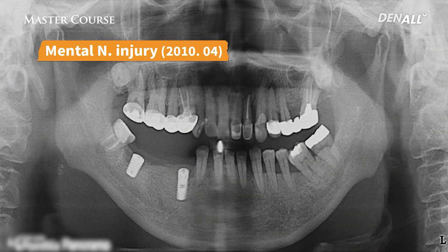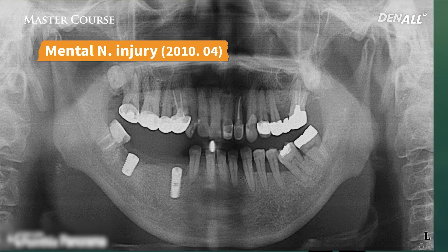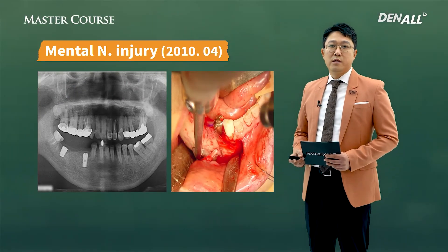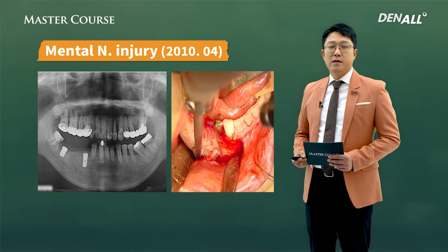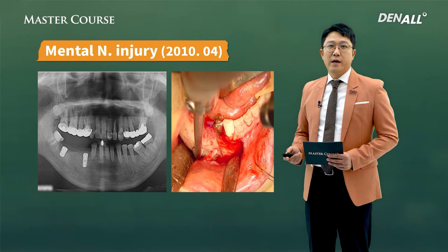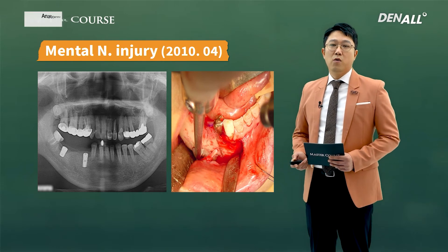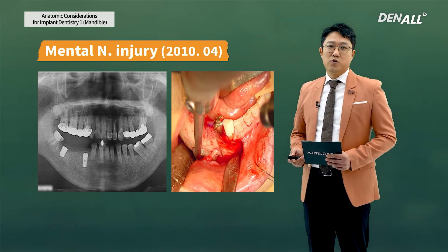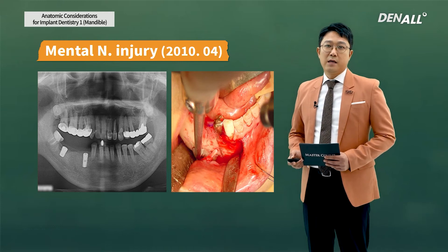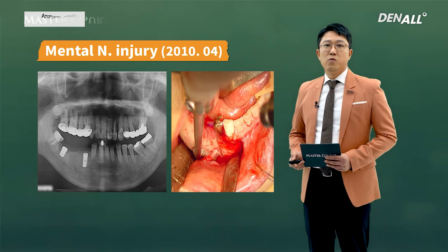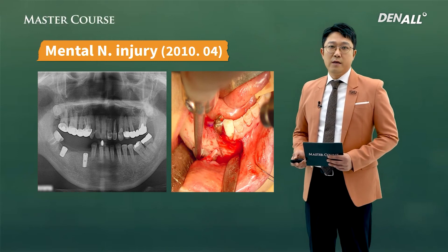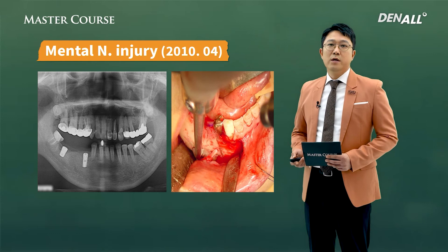In another case, a releasing incision was made and the mental nerve was injured. After implant placement, bone grafting was done, and to reposition soft tissue a releasing incision was made. Although the mental nerve was checked and the incision was made avoiding that nerve, the sensation problem lasted one and a half years. Therefore, when you place an implant in the mental nerve area, soft tissue needs to be handled with care.